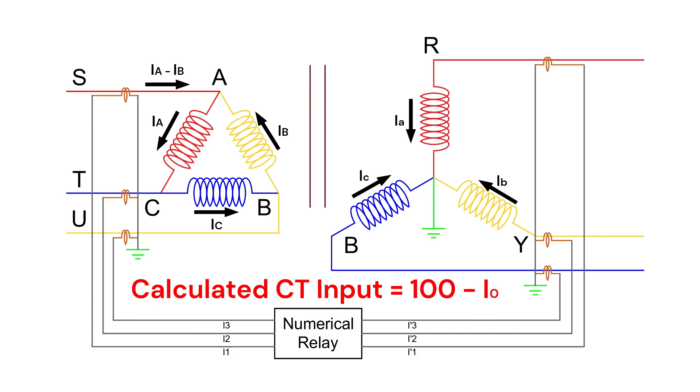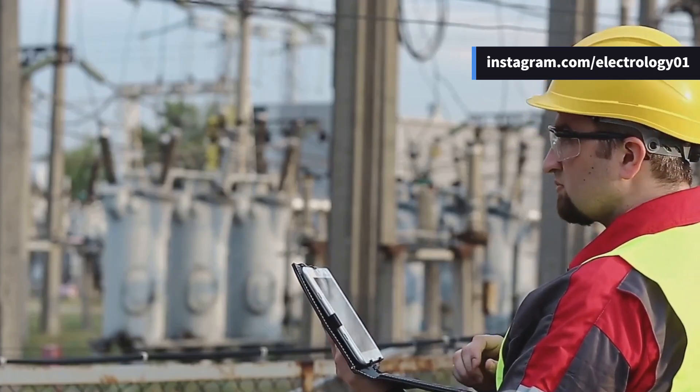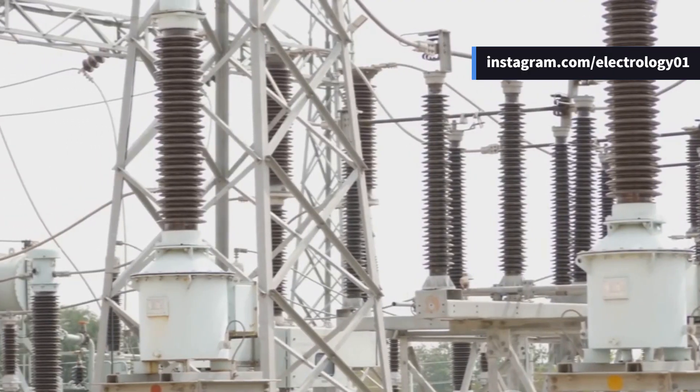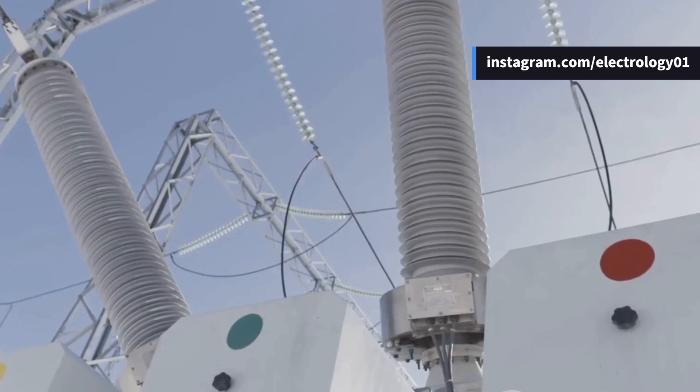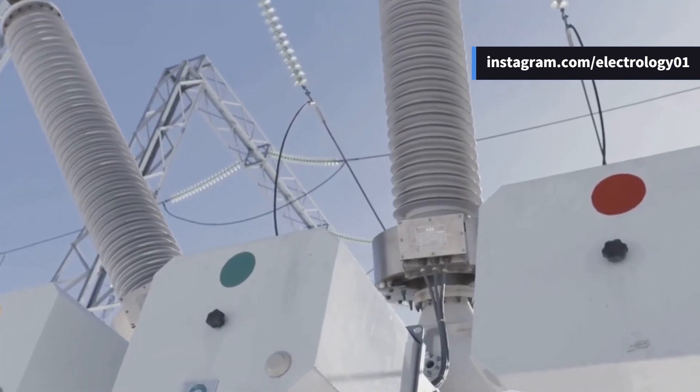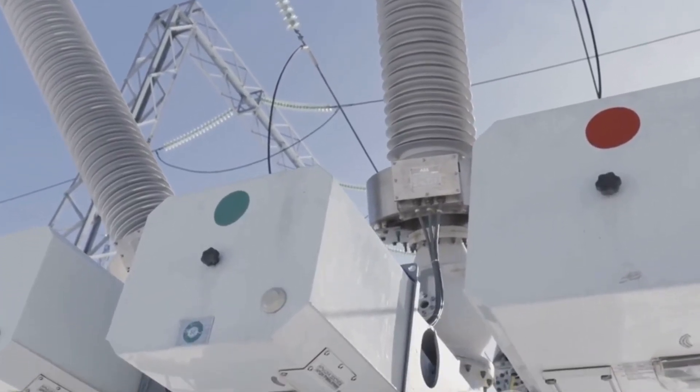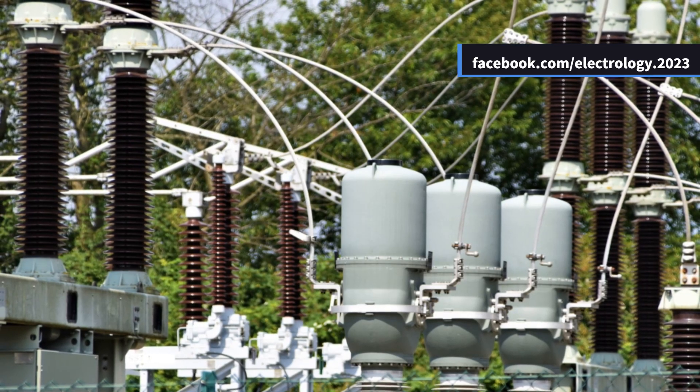So that's how zero-sequence filtering is used in transformer differential protection, whether through traditional CT connections or modern numerical relay filtering, this process ensures that the differential relay remains stable during through faults and operates only when necessary.